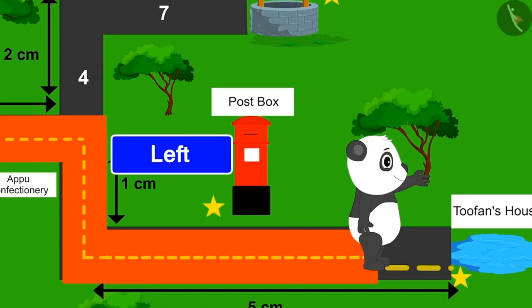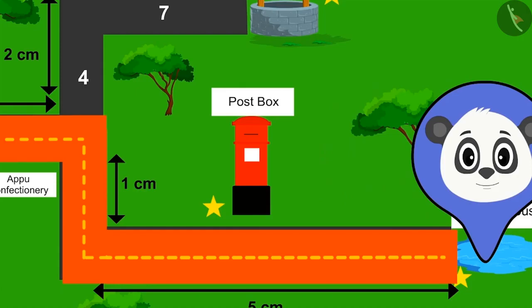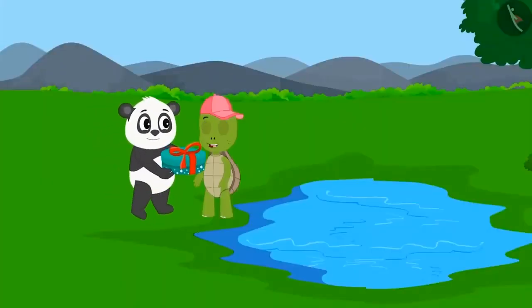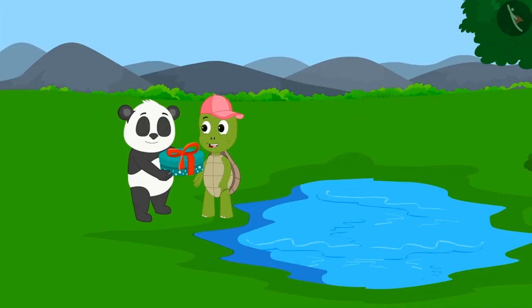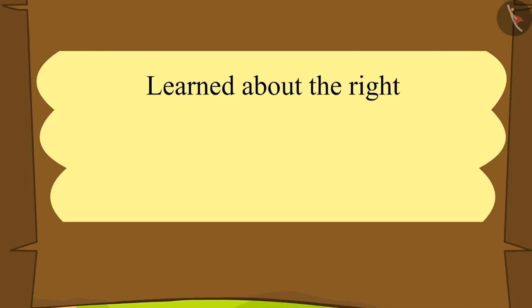Walking straight on road number 6, Golu finally reached Tufan's house. He gave Tufan the box of sweets that uncle sent and also gave him lots of birthday wishes. Children, in this lesson we have learnt about the right and left directions using maps.